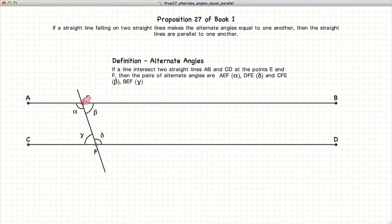Alternate angles, if you have our two straight lines with a third line crossing it, then alpha and delta would be considered alternate angles, and beta and gamma are considered alternate angles.